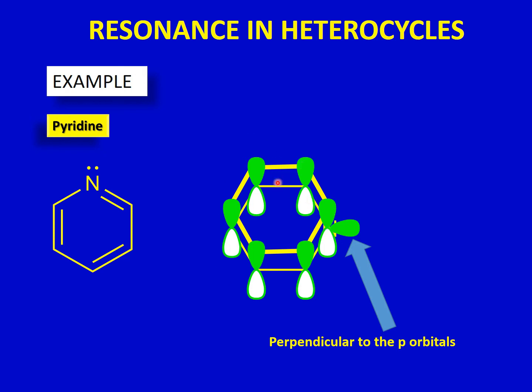This is how you can explain the resonance phenomena in heterocycles. As mentioned, resonance is not possible in all heterocycles — it occurs only in those molecules which have a conjugated system. Thank you so much for watching; stay tuned for more lectures in basic concepts in organic chemistry.